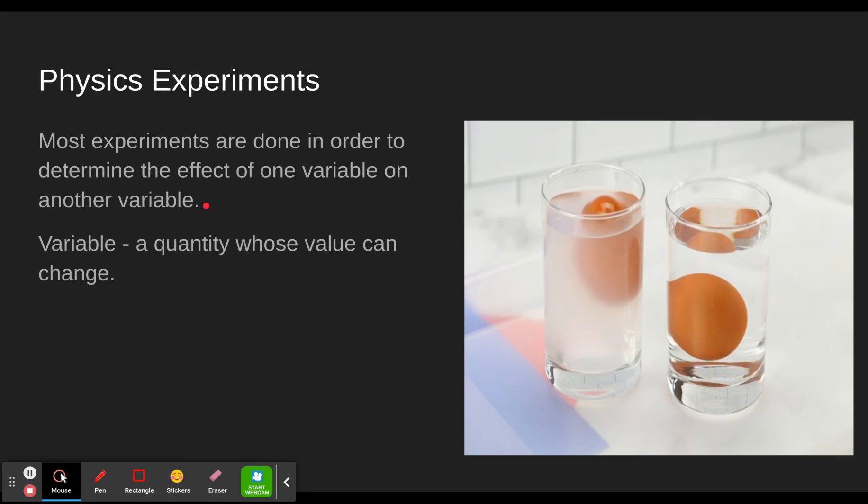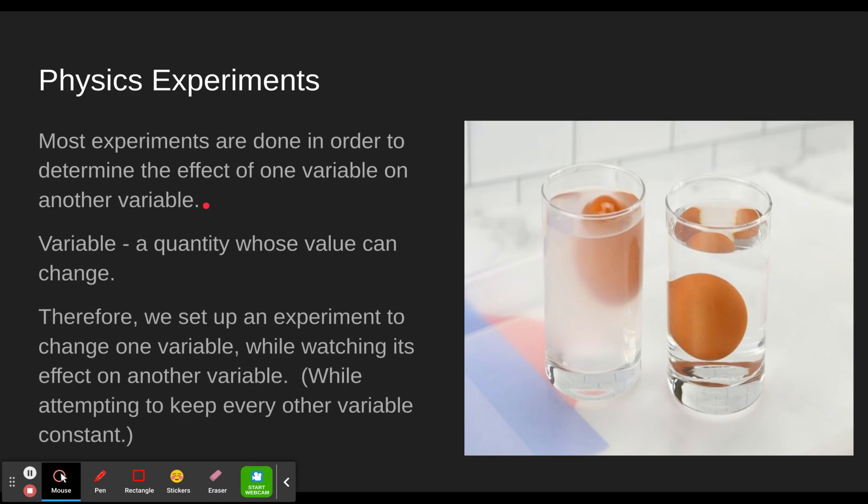How long should I bake my cake? The number of minutes I spend baking my cake will affect the tastiness of my cake. Okay, maybe that's not exactly a quantity tastiness. Let's make it one. Scale one to ten, how tasty was it? There you go. Now it's a quantity. So we set up an experiment to change one variable. So we intentionally change one of them. We want to see the effect of one variable on another. So we change one variable while watching its effect on another variable. And while we do that, we want to keep everything else constant so that we don't have something else changing our variable.